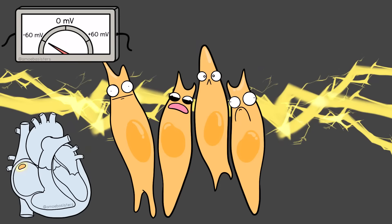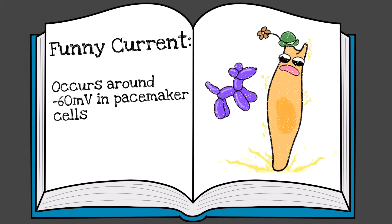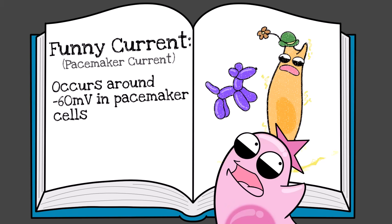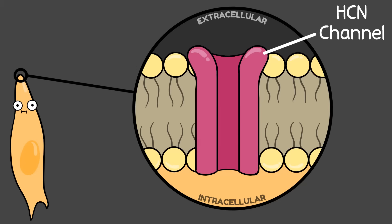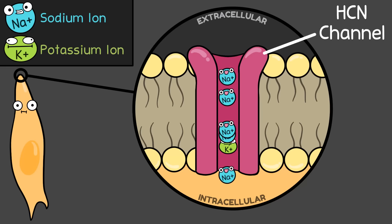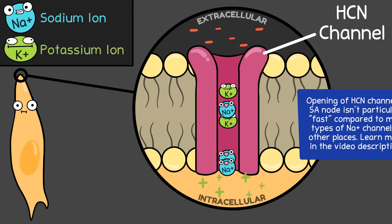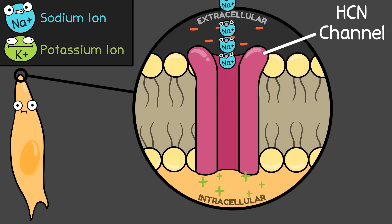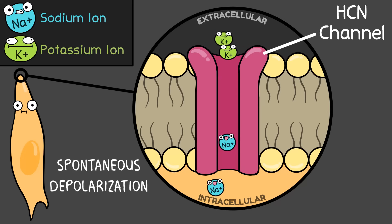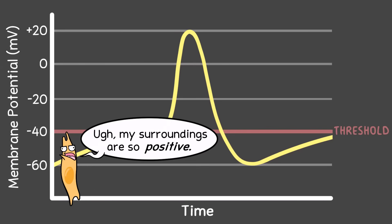So consider the SA node starting at around negative 60 millivolts. A current occurs in the pacemaker cells called the funny current — there's an interesting reason why, check it out in our description. It can also be called the pacemaker current. The funny current involves HCN channels being opened, which allow both sodium and potassium to travel through them, although much more sodium enters the cell than potassium leaves. The positive sodium ions going into the pacemaker cells greatly contribute to the membrane potential becoming more positive — this marks the start of spontaneous depolarization.